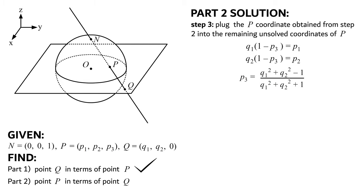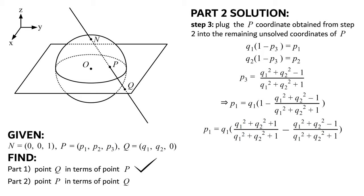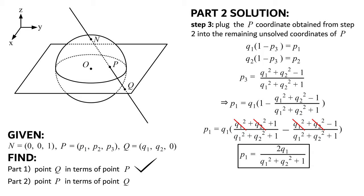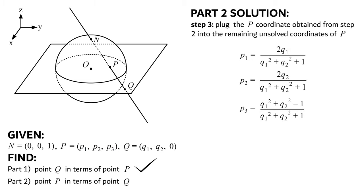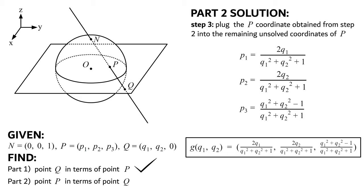This brings us to step 3, which is to plug the p-coordinate obtained from step 2 into the remaining unknown Cartesian coordinates of point p. After plugging p3 into the equation for p1, we get an expression, form a common denominator out of the 1, some terms in the numerator cancel out, and after the 1s are added together and the denominators are combined, we get that p1 equals 2q1 over (q1² plus q2² plus 1). Following the same steps for p2, we get p2 equals 2q2 over (q1² plus q2² plus 1). Since we have all of p's Cartesian coordinates in terms of q, we can now write out our inverse stereographic projection function g of q equals p.